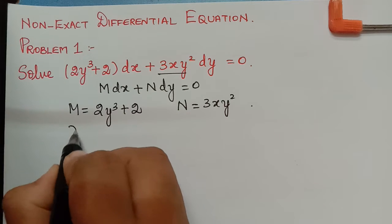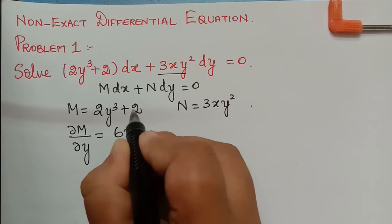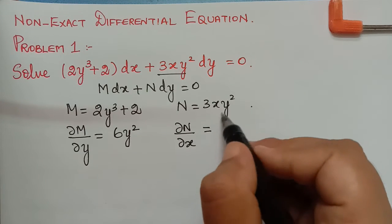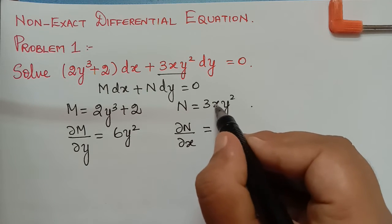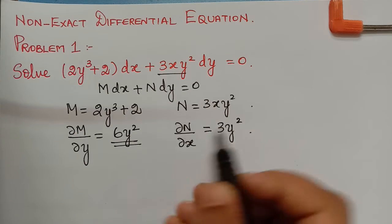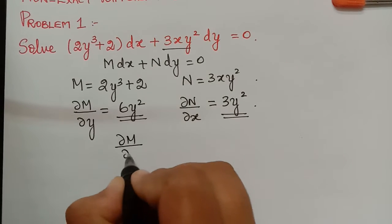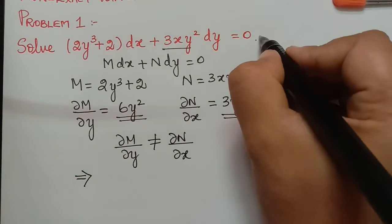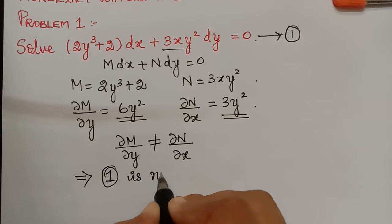First we have to find ∂M/∂y, which is equal to 6y², and the differentiation of 2 is 0. And ∂N/∂x: differentiating partially with respect to x means the differentiation for x is 1, and 3y² will be treated as constant, so we get 3y². We observe that ∂M/∂y is not equal to ∂N/∂x, so the given equation (equation 1) is not exact.